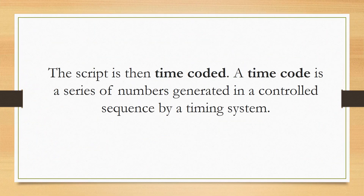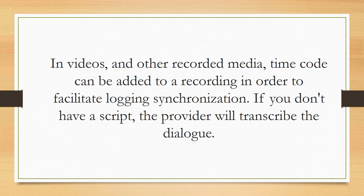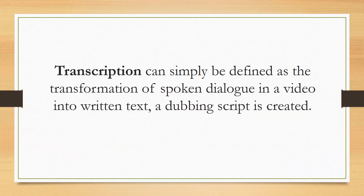A timecode is a series of numbers generated in a controlled sequence by a timing system. In videos and other recorded media, timecode can be added to a recording in order to facilitate logging and synchronization. If you don't have a script, the provider will transcribe the dialogue. Transcription can simply be defined as the transformation of spoken dialogue in a video into written text.